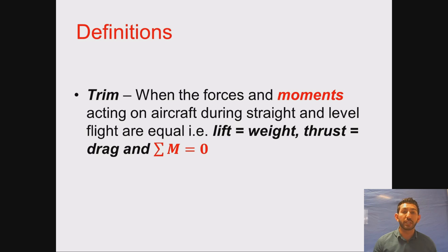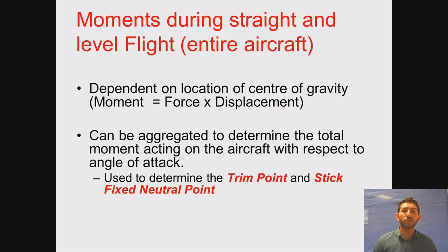One of the terms commonly encountered in flight mechanics is the concept of trim. An aircraft is said to be in trim when the forces and moments acting on it during straight and level flight are balanced — lift equals weight, thrust equals drag, and the sum of all moments equals zero. The moments depend on where the centre of gravity is, and as fuel burns during flight, the CG moves and the aircraft must be periodically re-trimmed.